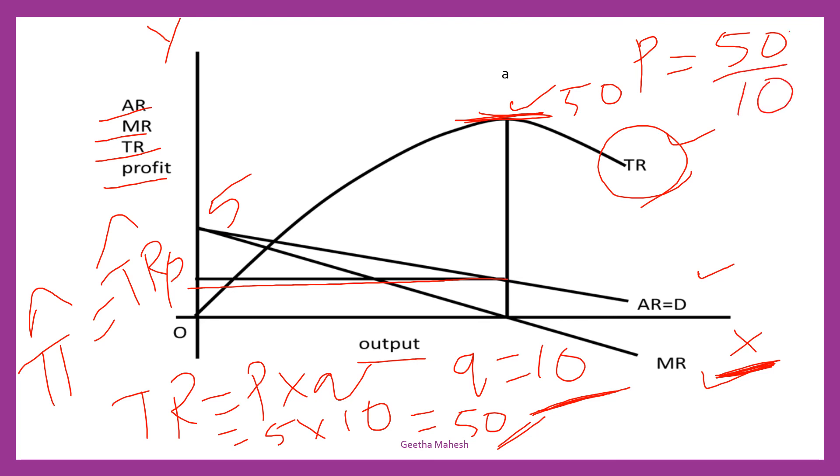So, 50 divided by 10, you will get 5. So, the monopoly firm is going to fix 5 rupees. And at 5 rupees, consumers are ready to buy 10 units of output. At 10 units of output, monopoly firm is going to maximize its total revenue.